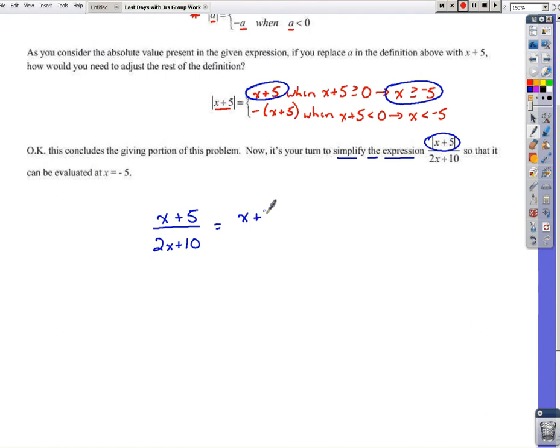The numerator would be x plus 5, but the denominator we can take a 2 out of, meaning x plus 5 is left. So if you look at how that's been factored now, the x plus 5s would cancel out, and as those cancel out, of course, 1s hold their places, meaning this expression simplifies to 1 half.